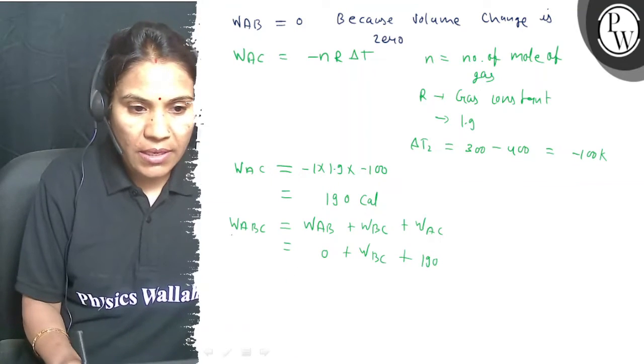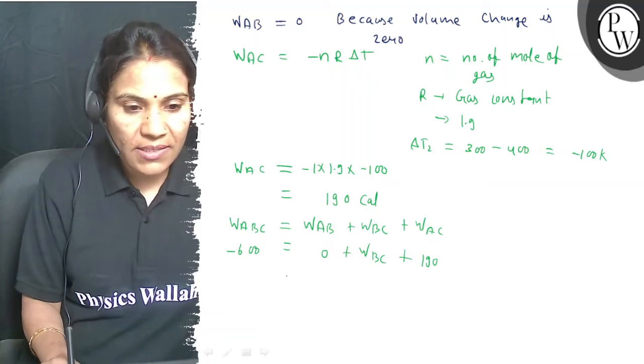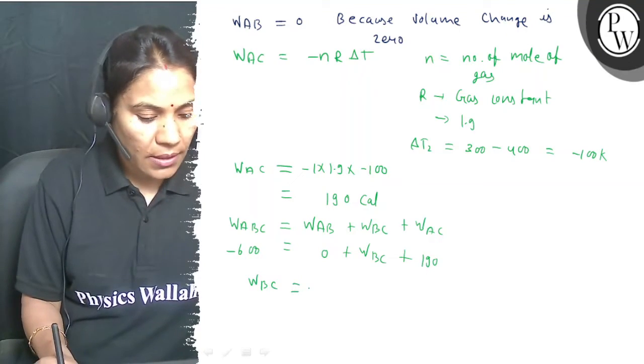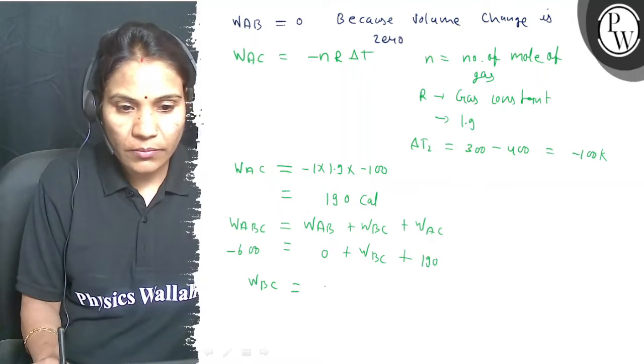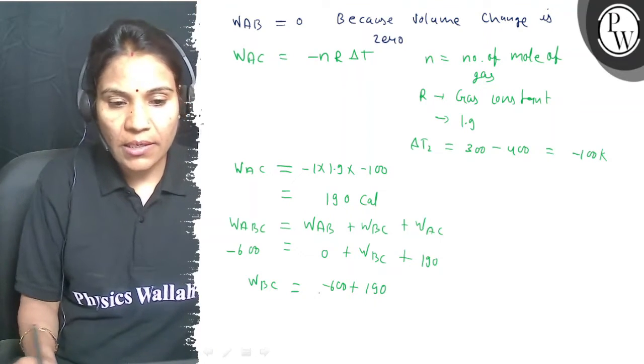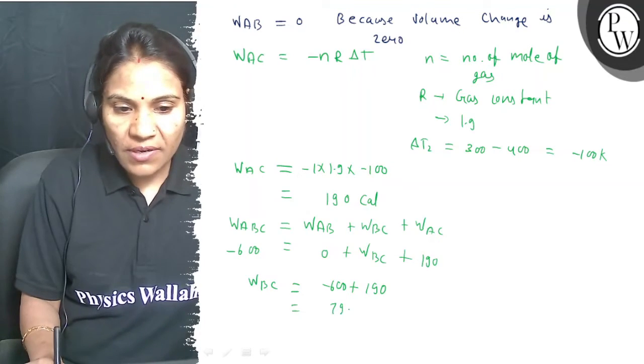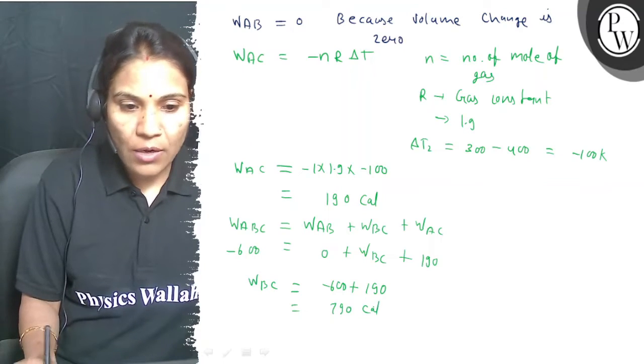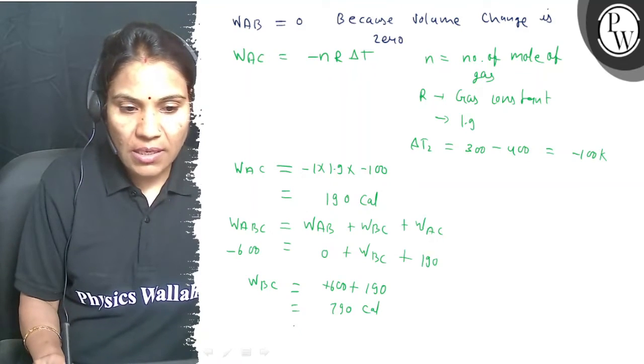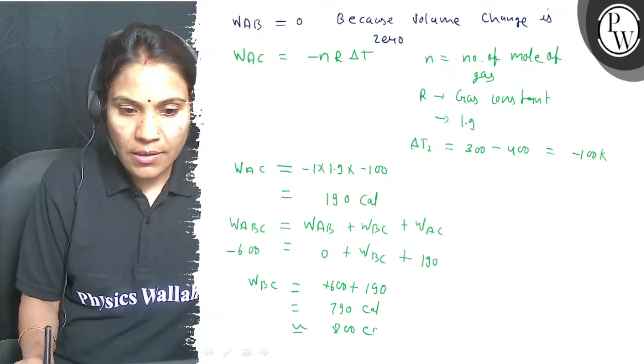W BC plus 190, and W ABC equals minus 600 calories. So from this, W BC is equal to minus 600 plus 190, which equals minus 410 calories. Wait, this is about equal to minus 800 calories.